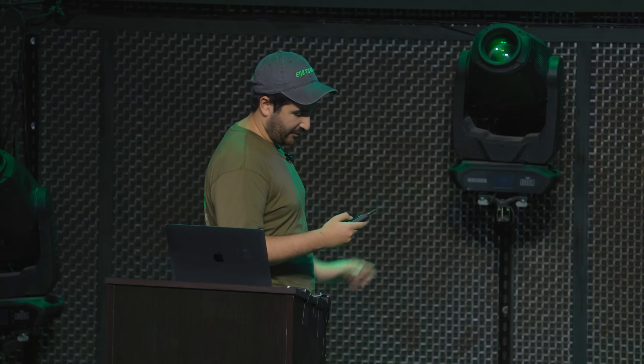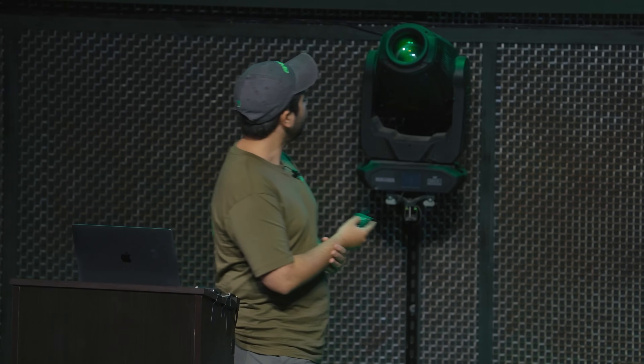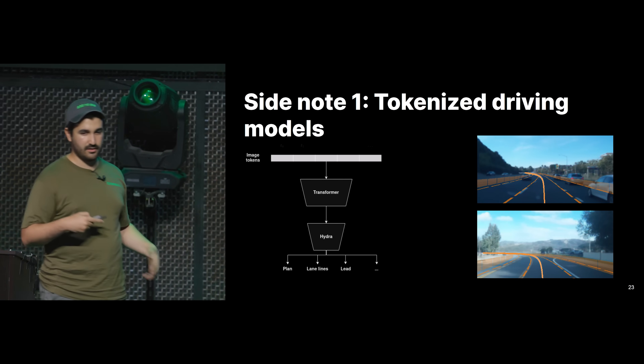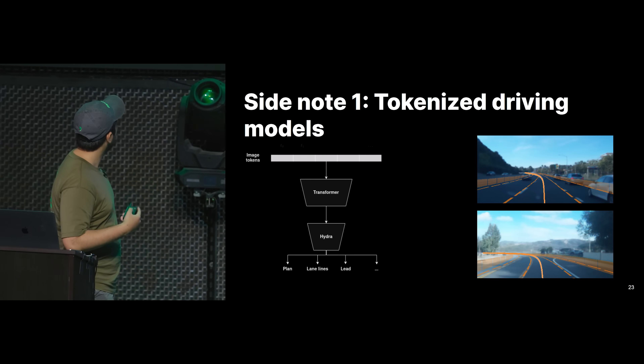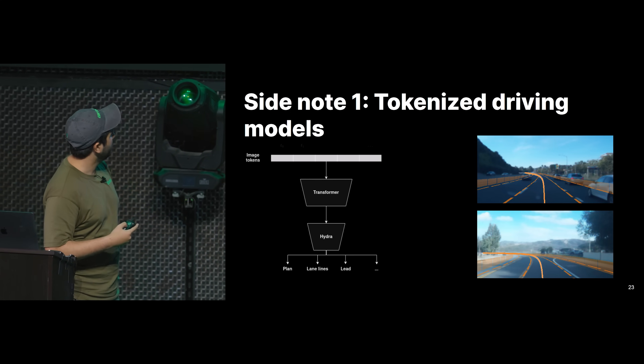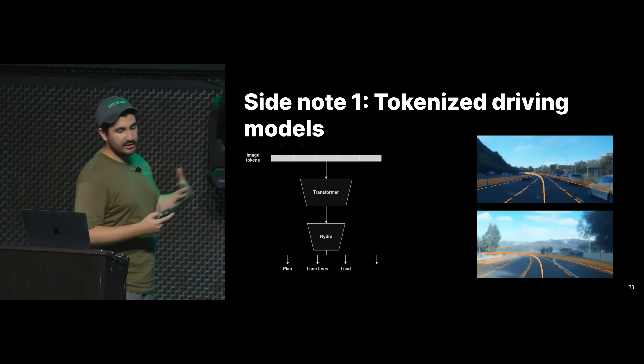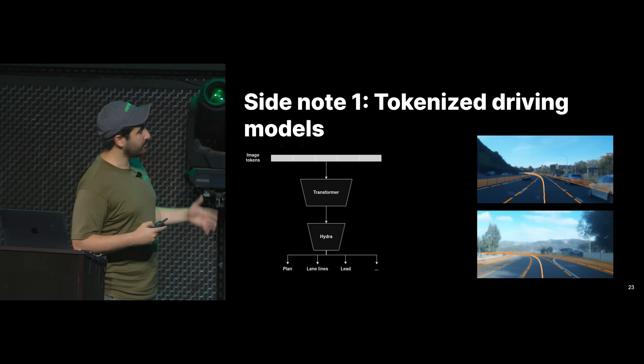Another side note: I've been showing you images going back to image space, and it's always good that we can do that to debug the dynamics models. But in order to train a driving model, we actually don't need to go back to image space. You can train the model directly on the tokens. These compressed tokens have everything you need to know to drive. Instead of a convolutional neural network taking in an image and predicting the plan, now we have a transformer that predicts the plan, lane lines, and all of that. It predicts reasonable outputs — so we don't technically need to go back to vision space.